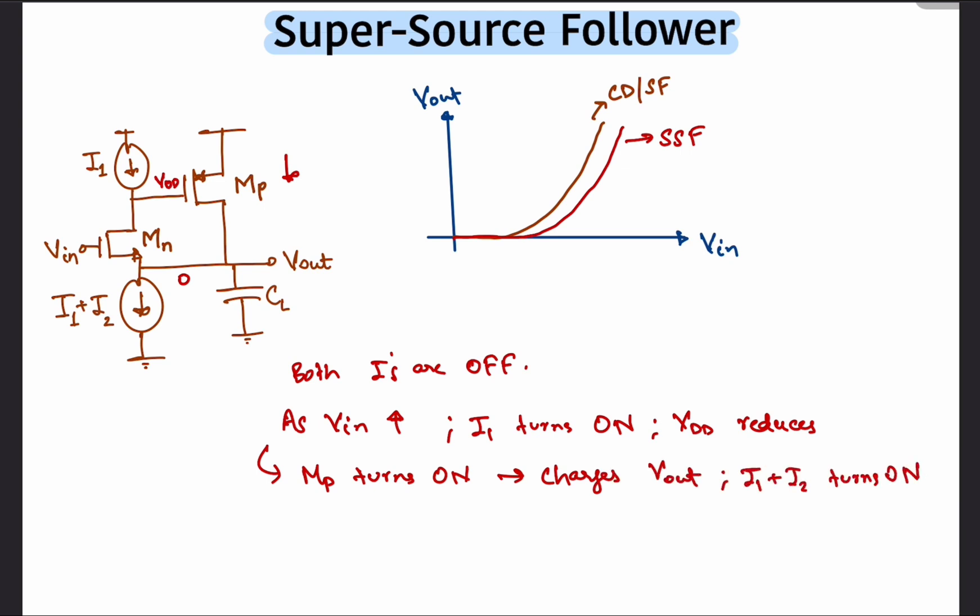For the ordinary source follower, as Vn increases from 0, the bottom current source starts to turn on. When Vn equals Vgs plus V overdrive of the current source, the circuit operates properly.